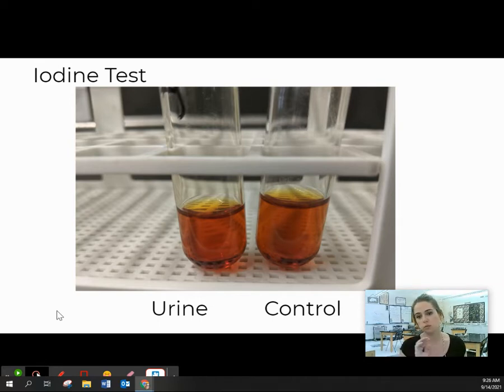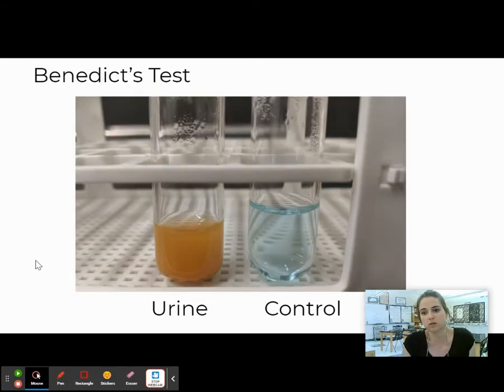So lastly, we tested for iodine with the urine to see if there was any change between the control and the urine, and there was not. And so that tells me that there's no starch in the urine because it didn't show a positive or it didn't turn black when mixed with urine.